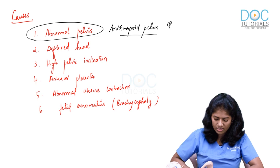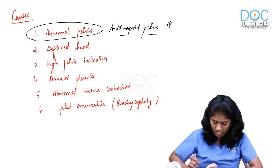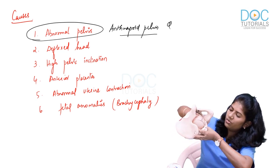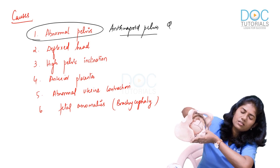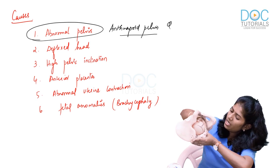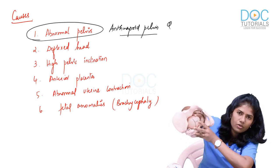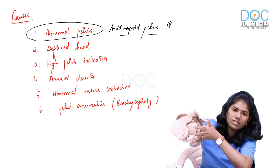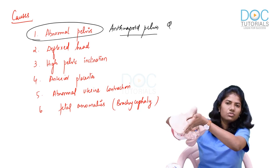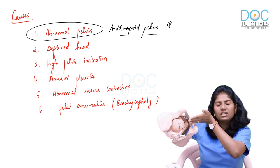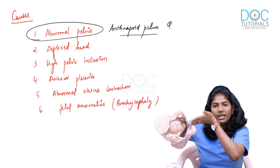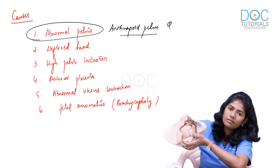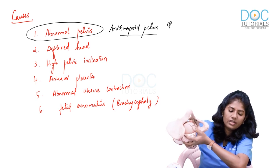The incidence of occipito-posterior is around 10%. Now, in right occipito-posterior position, the posterior fontanel is close to the right sacroiliac joint. The sagittal suture runs from the right sacroiliac joint to the left iliopectineal eminence — that is the right oblique diameter. So the diameter of engagement in right occipito-posterior is the right oblique diameter.